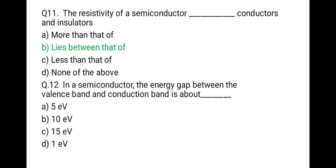The next question: in a semiconductor, the energy gap between the valence band and conduction band is about how much? The correct option is approximately 1 electron volt.